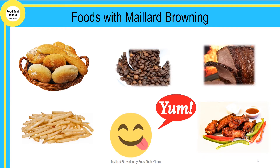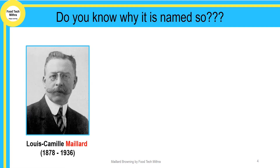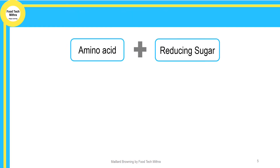The golden brown color of french fries also happens because of Maillard browning. This non-enzymatic browning is called the Maillard reaction, named after a French chemist and physician, Louis Camille Maillard. He described the reaction between amino acids and sugar, finding that when they undergo processing at elevated temperature, these reactions produce aromatic components.